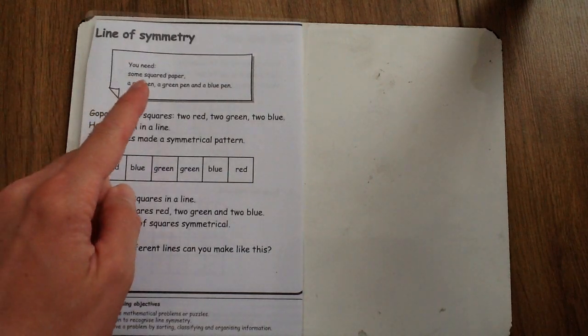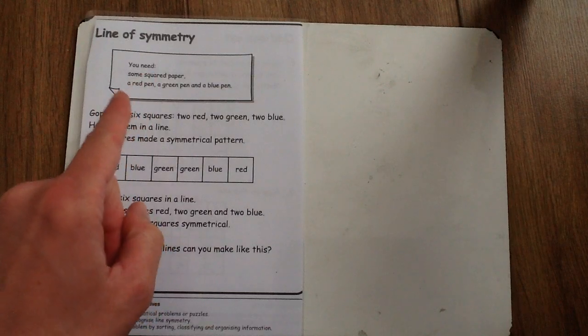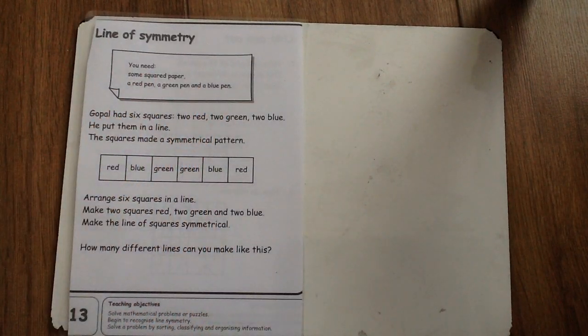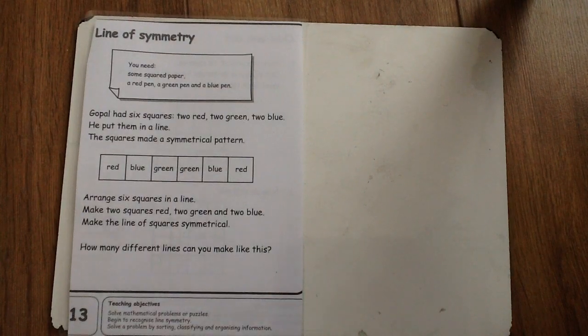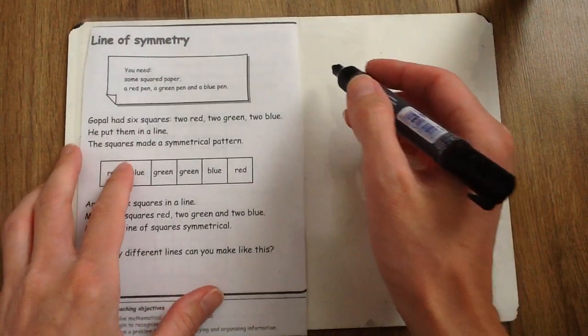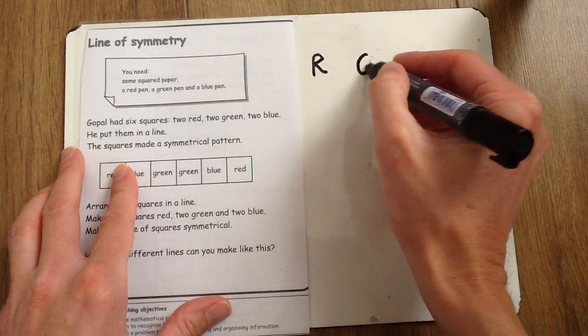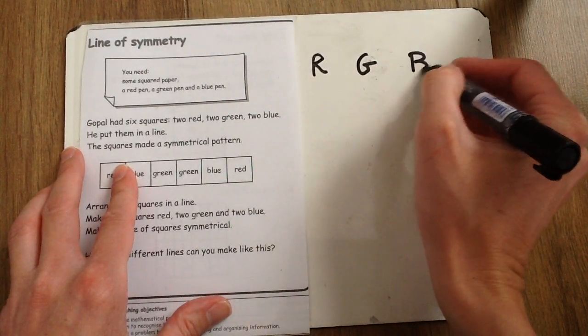It does say here you need some square paper, but any paper will do. And it also says you do need a red pen, a green pen and a blue pen. But don't worry if you don't have that. If you have any sort of pen or pencil, you could just write the letters to show the different colours. Just like that.